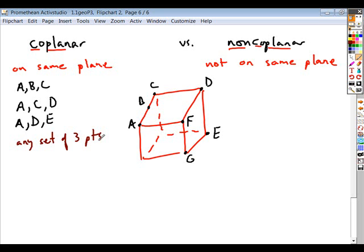What about a set of two points? Yeah, so any set of two points, always coplanar as well. So what about when you get to four points? Now you have to be more careful.